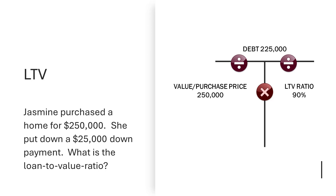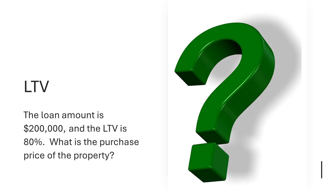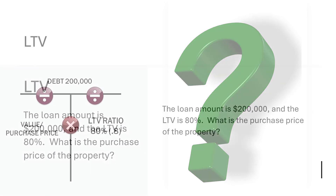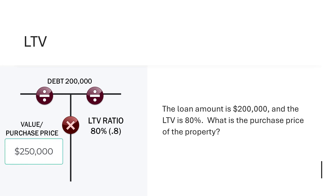Here's another example. The loan amount is $200,000 and the LTV is 80%. What is the sales price for the property? $200,000 divided by 0.80 equals $250,000.